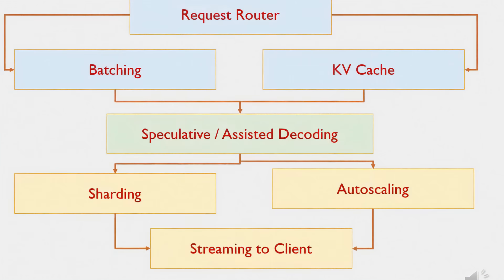How do answers stay fast when millions of people ask at once? The key is an optimised inference and scaling pipeline. It starts with a request router, which decides the best place to run your query. Batching groups similar requests together so the system can process many at once without slowing down. During generation, key-value caching and speculative decoding make token production much faster, reusing previous computations instead of starting from scratch. For very large models, sharding spreads the work across multiple machines, letting them share the memory load. Auto-scaling ensures capacity expands during traffic spikes, keeping responses smooth under heavy demand. Results are streamed back token by token, so you start seeing the answer almost instantly.